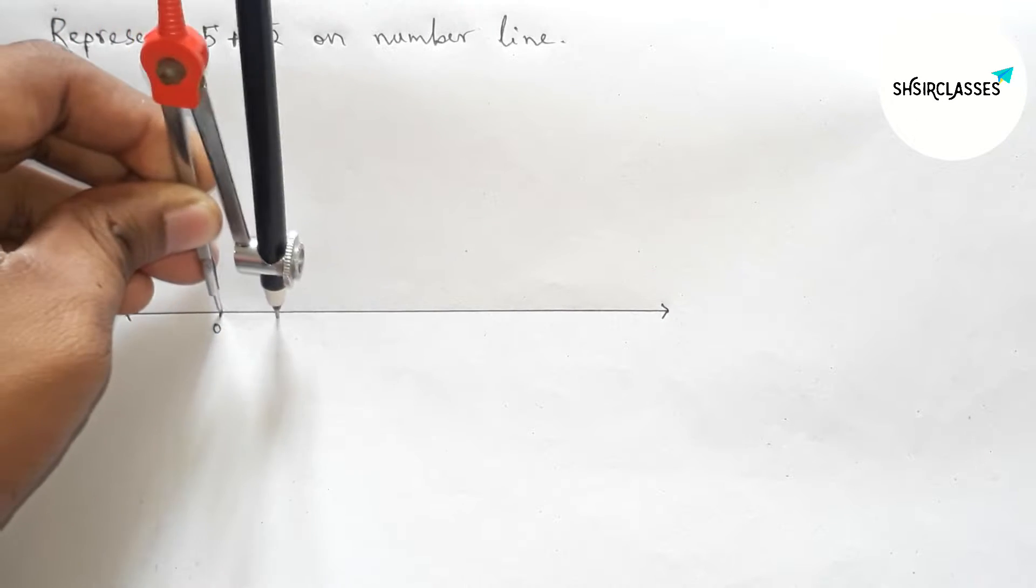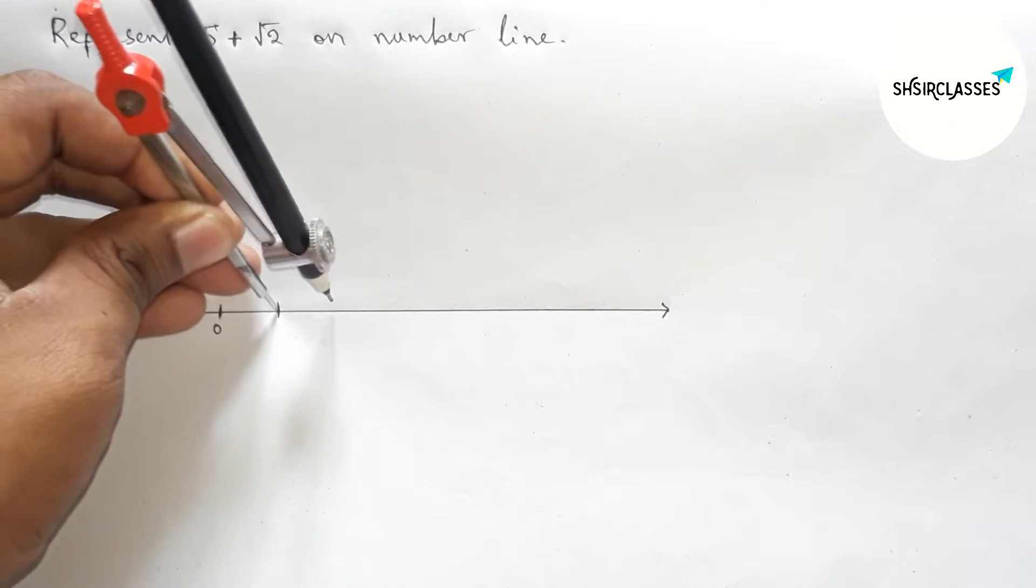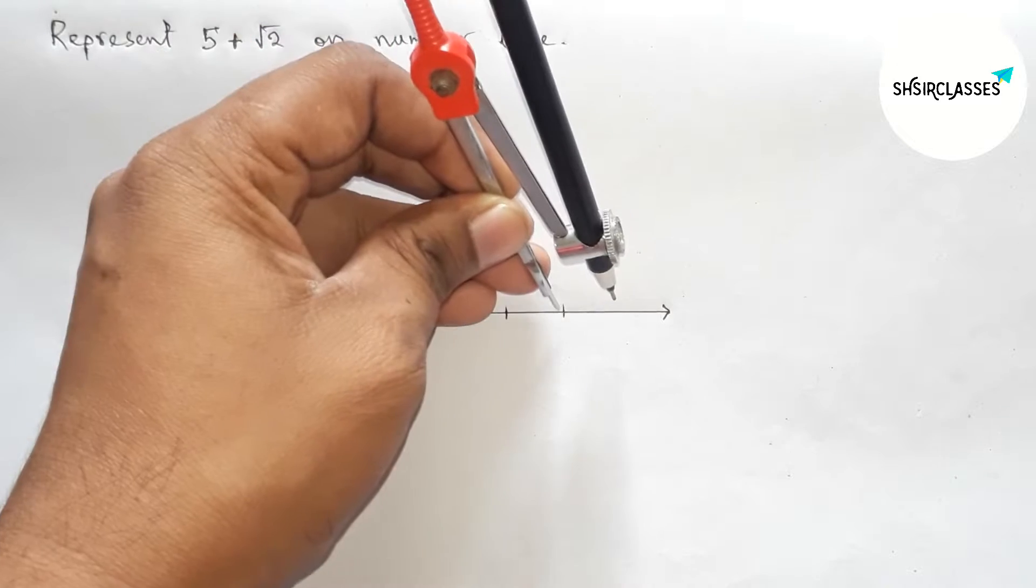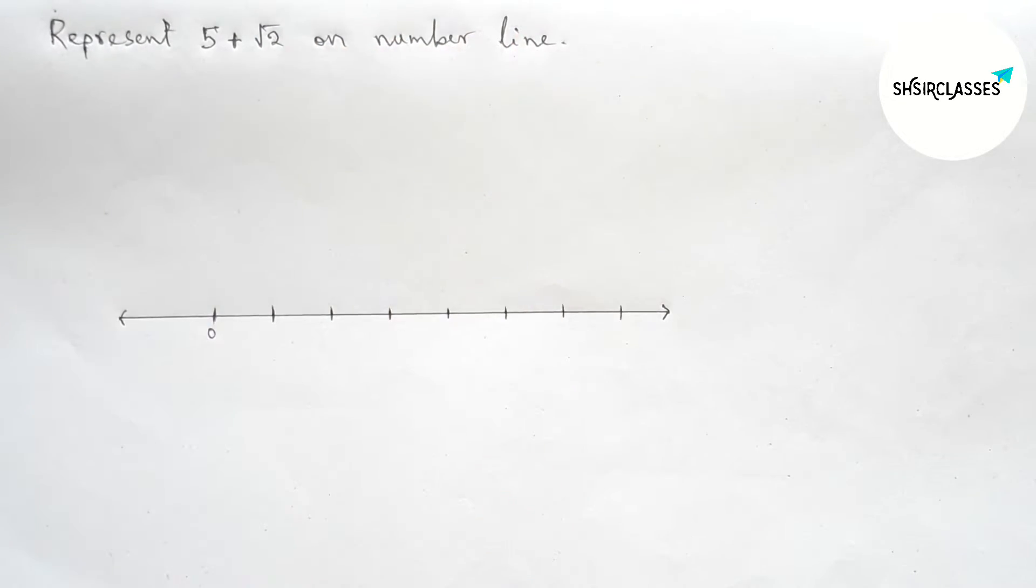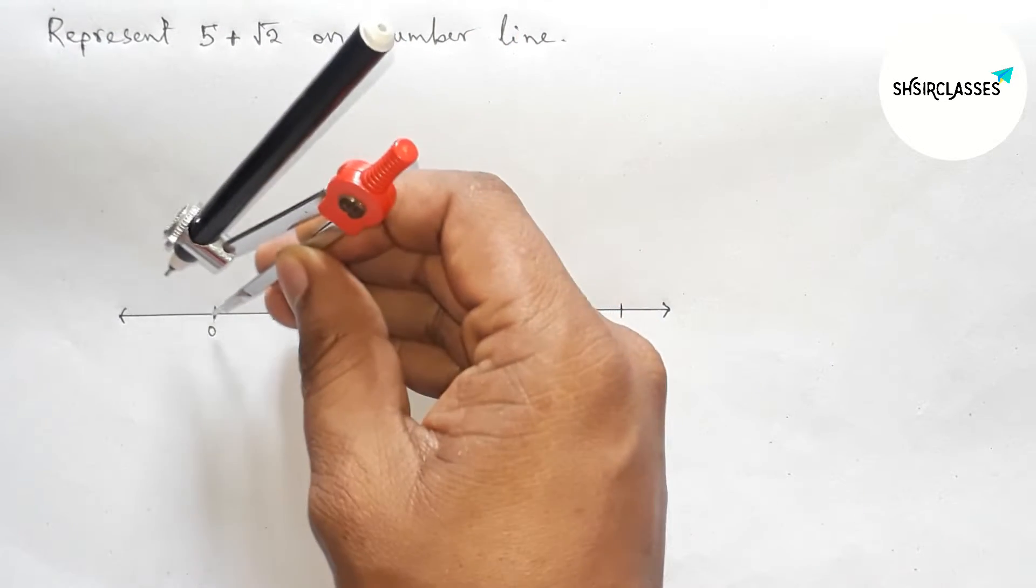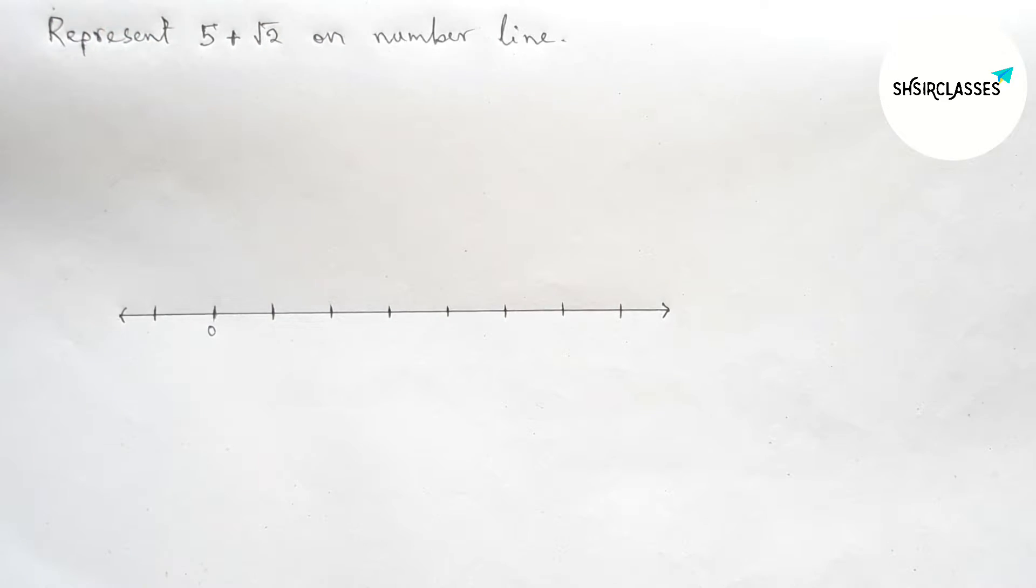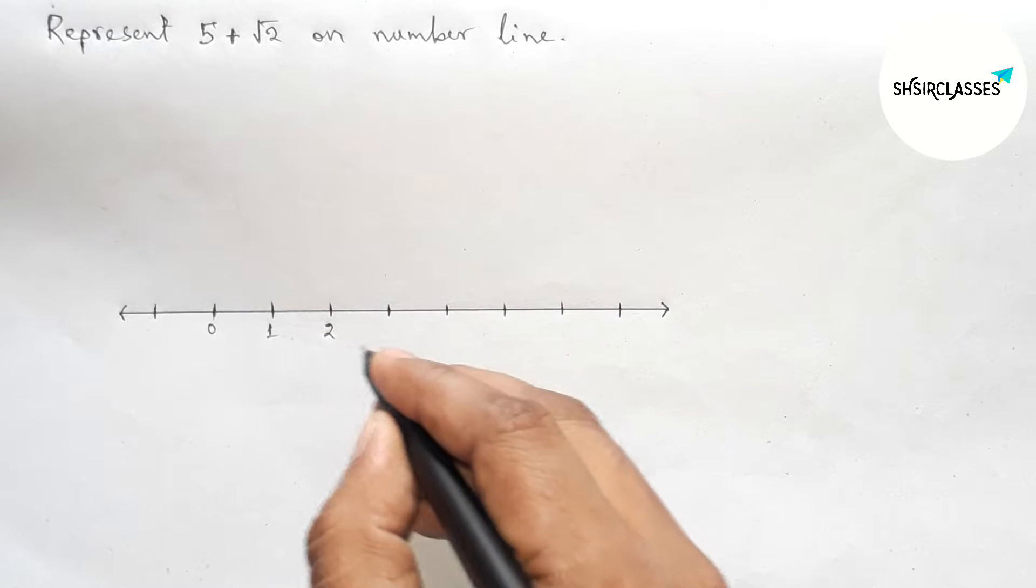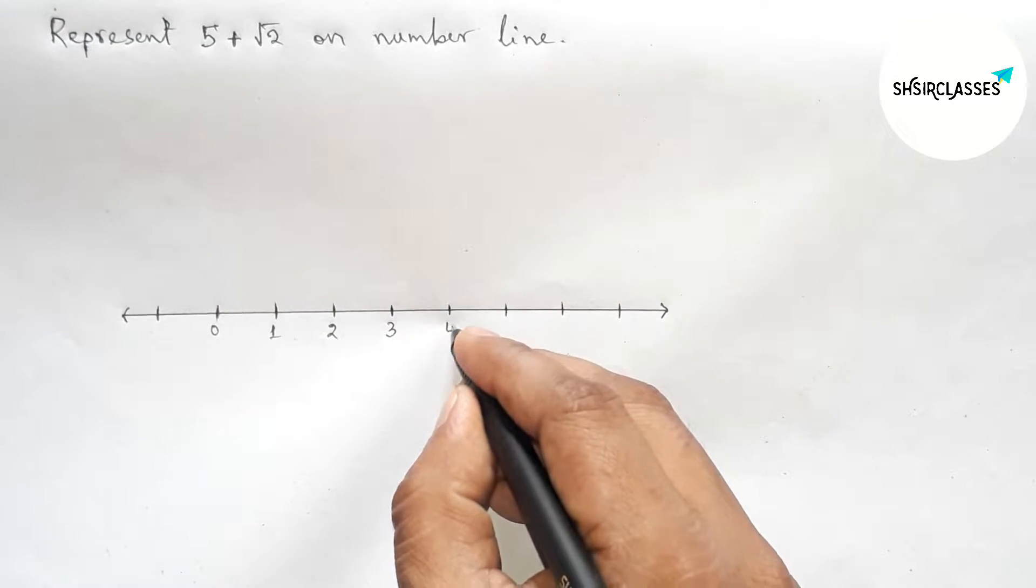Now with the help of compass, putting the compass on zero and taking any point. First marking one, two, three, four, five on the number line with the help of compass. So here one, two, this is three, four, five, six, seven, and this side minus one.